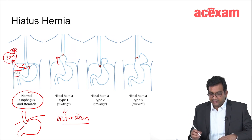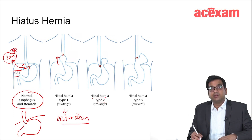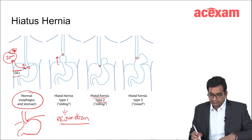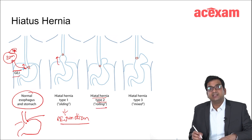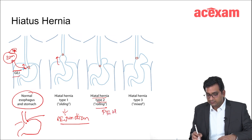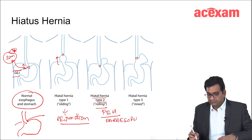Whenever there is herniation of the stomach whereas the GE junction is normal, it is rolling type hernia, or hiatus hernia type 2, or paraesophageal hernia.